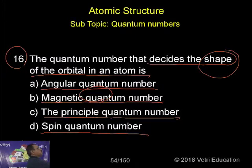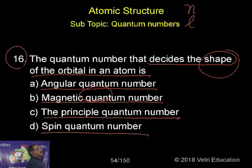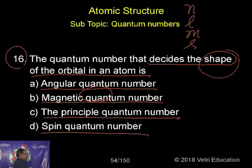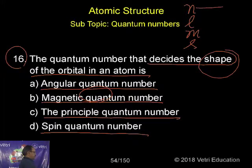The four quantum numbers in order are: first, n — the principal quantum number; second, l — the azimuthal quantum number; third, m — the magnetic quantum number; and fourth, s — the spin quantum number.